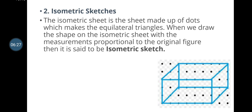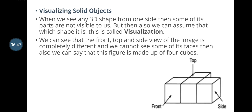Isometric sketches: an isometric sheet is a sheet made up of dots which form equilateral triangles. When we draw a shape on the isometric sheet with measurements proportional to the original figure, it is called an isometric sketch. This is another method of drawing a 3D sketch.